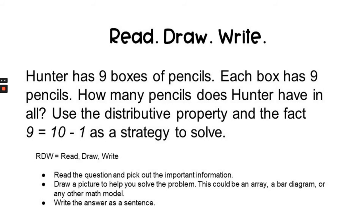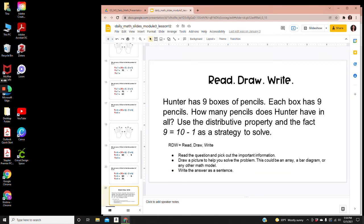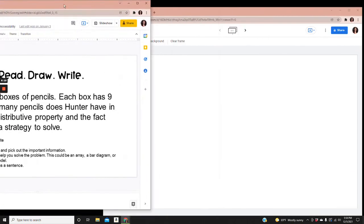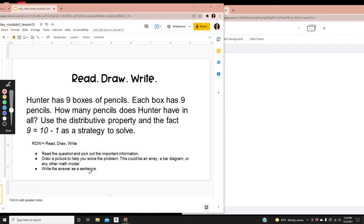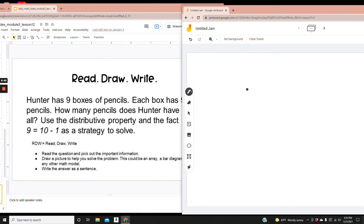Hunter has 9 boxes of pencils. Each box has 9 pencils. How many pencils does Hunter have in all? Use the distributive property and the fact 9 equals 10 minus 1 as a strategy to solve. We're going to read it and pick out the most important information: Hunter has 9 boxes of pencils, each box has 9 pencils, so 9 times 9 equals what?